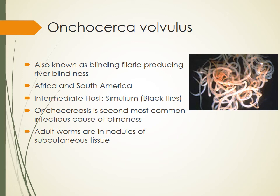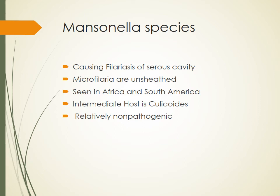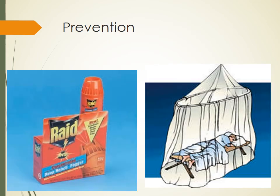Mansonella species cause filariasis of the serous cavity. Microfilaria are unsheathed — a distinguishing characteristic. They are seen in Africa and South America, not commonly in India. The intermediate host is Culicoides flies. Mansonella is relatively non-pathogenic with very few noticeable symptoms — essentially asymptomatic. There are a few more filarial worms of zoonotic importance transmitted from animals to humans, but they are not discussed here as they are less clinically relevant.